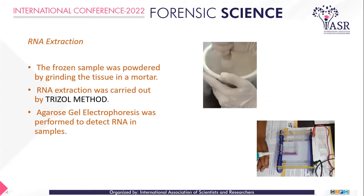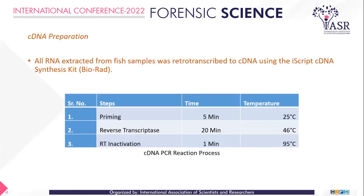We extracted RNA using the TRIzol method. The frozen sample was powdered and then the standard TRIzol method was used to extract the RNA. We detected the RNA in each sample with the help of agarose gel electrophoresis to assess the quality of RNA in the sample. RNA was then converted to complementary DNA because we needed it to perform RT-PCR using the SYBR Green method.